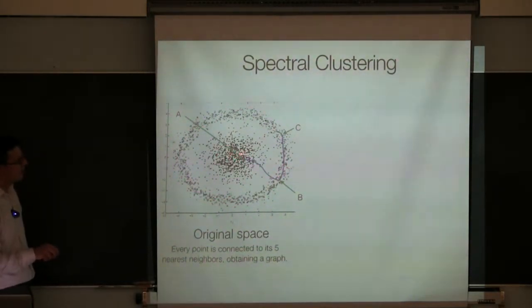Many clustering algorithms that try to find clusters in data would fail on this very simple two-dimensional data set because this is one cluster, this is another cluster. And why do we say that? Because if you start here, you're unlikely to end up in the outer cluster. And if you start in the outer cluster, you're likely to random walk in the outer cluster but not reach the inner one.